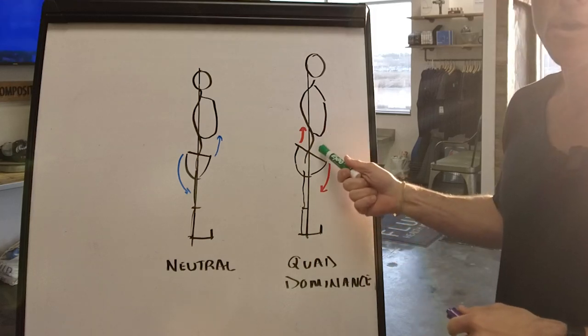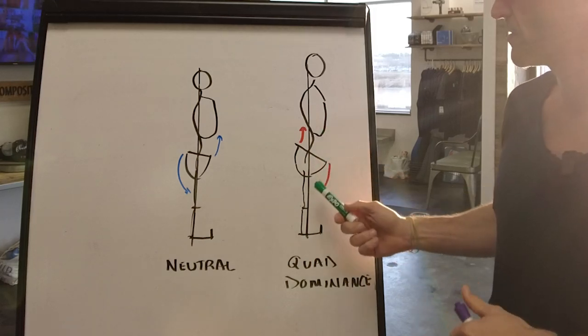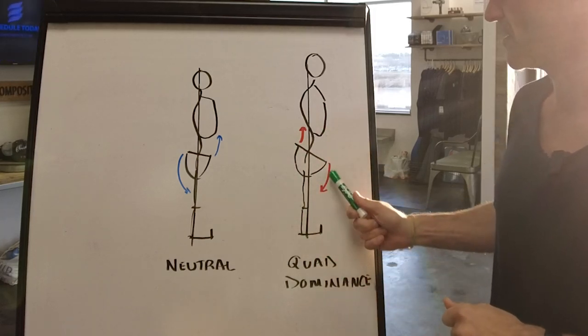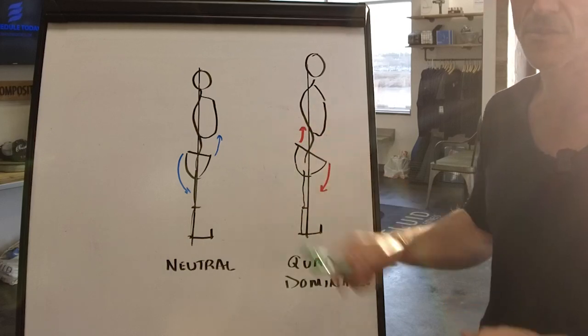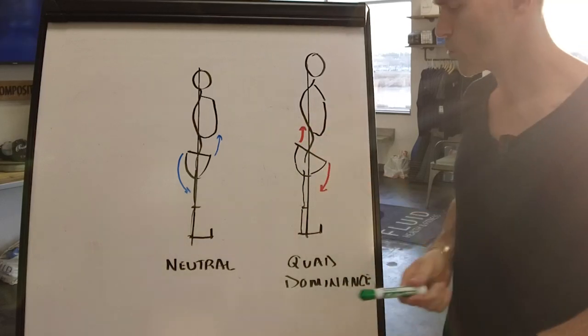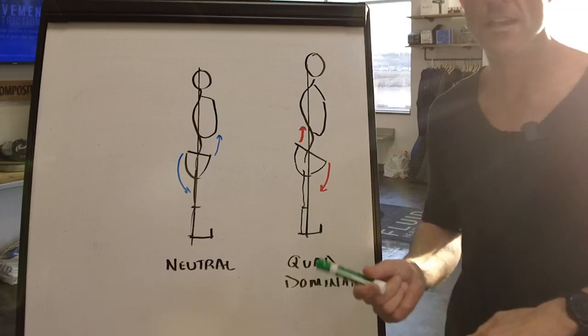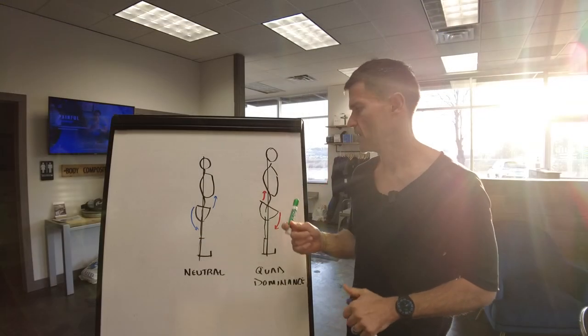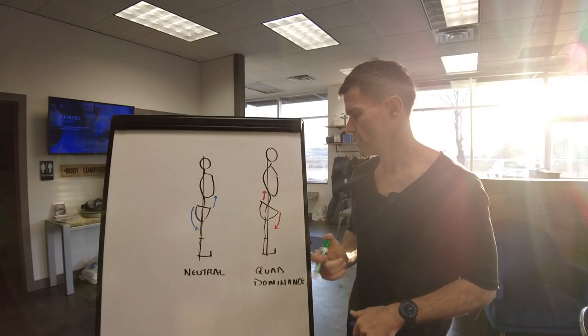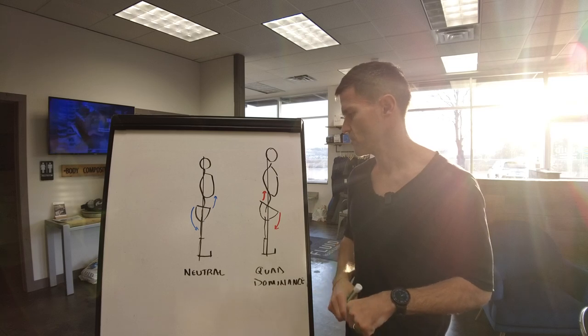We need to work on increasing the strength of these muscles and then reducing the dominance of the quads and the back extensors to resolve it. This is just one particular issue of many, but it is very common and very correctable. That's what we do with corrective exercise strategies.